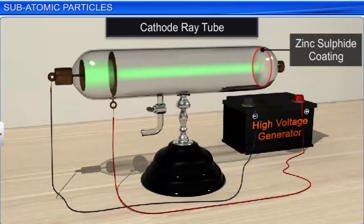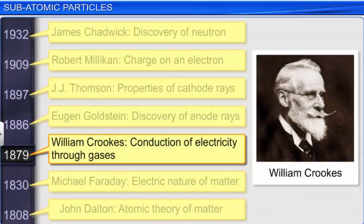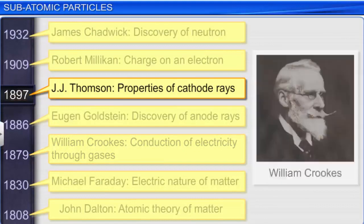This time, he noticed a bright spot on the coating behind the anode, which confirmed two things. One, the current consisted of invisible rays of particles, some of which could pass through the perforated anode. Two, these rays were emitted out of the cathode and moved towards the anode. These rays were named cathode rays. Some other facts about cathode rays were discovered in 1897 by J.J. Thomson and other scientists through a series of experiments.